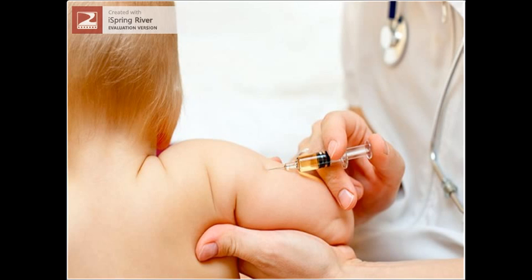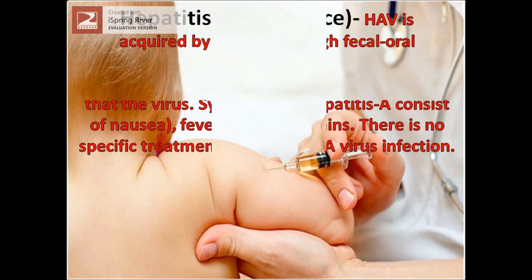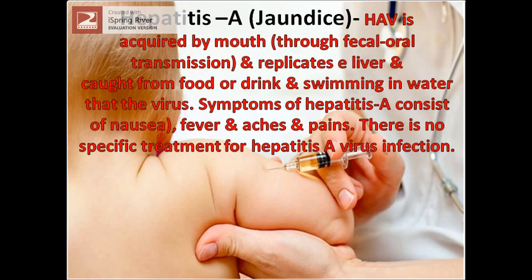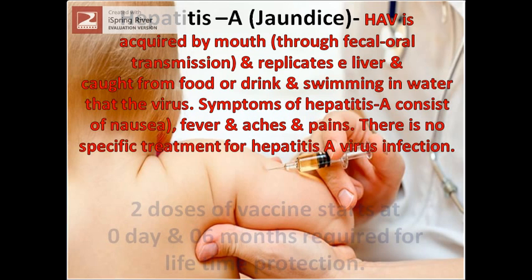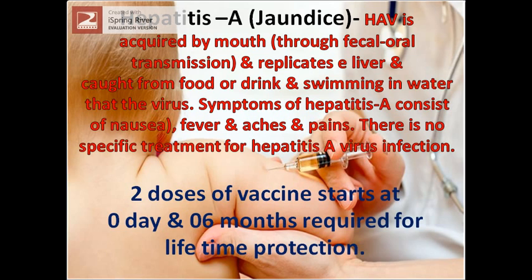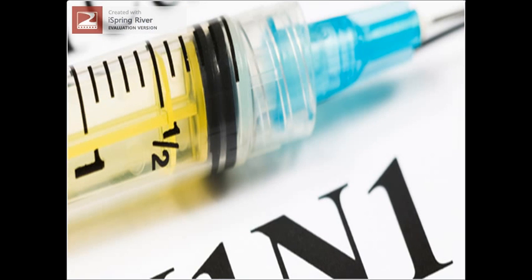Hepatitis A causes jaundice. HAV is acquired by mouth through fecal-oral transmission, and replicates in the liver. It can be caught from contaminated food or drink, or swimming in water containing the virus. Symptoms of hepatitis A consist of nausea, fever, aches, and pains. There is no specific treatment for hepatitis A virus infection. 2 doses of vaccine starting at day 0 and 6 months, required for lifetime protection.